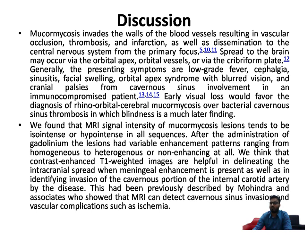Generally, the presentation includes low-grade fever, sinusitis, facial swelling, and orbital apex syndrome. Early visual loss would favor the diagnosis of rhinocerebral mucormycosis over bacterial cavernous sinus thrombosis, in which blindness is a much later finding. We found that the MRI signal intensity of mucormycosis lesions tended to be iso-intense or hyperintense in all sequences. After gadolinium administration, lesions had variable enhancement patterns ranging from homogeneous to heterogeneous or non-enhancing. Contrast-enhanced T1-weighted images are helpful in delineating intracranial spread when meningeal enhancement is present, as well as identifying invasion of the cavernous portion of the internal carotid artery.